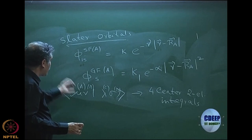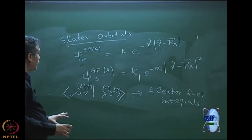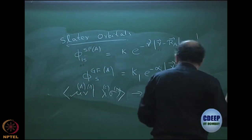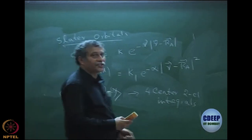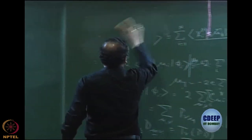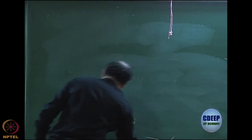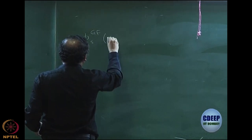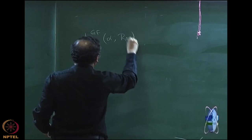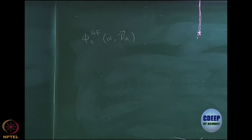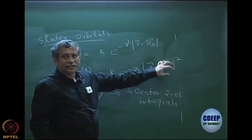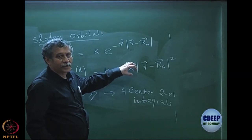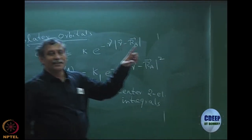On the other hand, if I use Gaussian functions instead of Slater functions, these integrals are very easy to evaluate for a very simple reason: Gaussian functions follow a very interesting theorem. Let me state the theorem. I am talking of S-type Gaussians with exponent alpha and center R_A. Let me mention the nomenclature: the center is the coordinate, and what appears in the exponent is called the exponent — this is an important name.